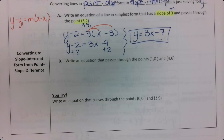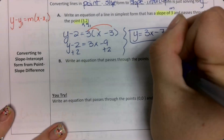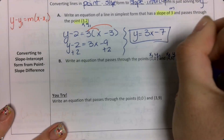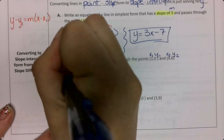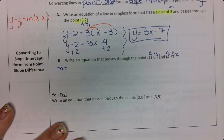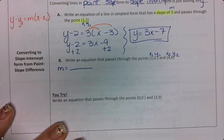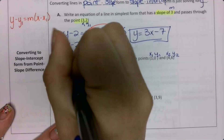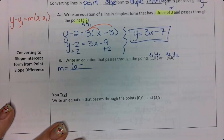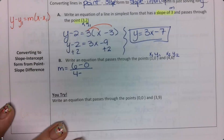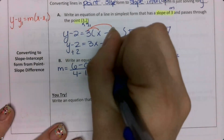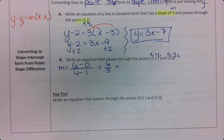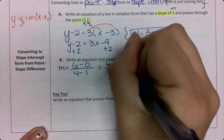For part b, same idea except this time I'm given two points. So I first want to plug into the slope formula. I'm going to label x1, y1, x2, y2. Plugging in: y sub 2 is 6, y sub 1 is 0, x sub 2 is 4, x sub 1 is 1. So 6 minus 0 over 4 minus 1 gives me 6 over 3, and 6 divided by 3 is 2. So my slope is 2.